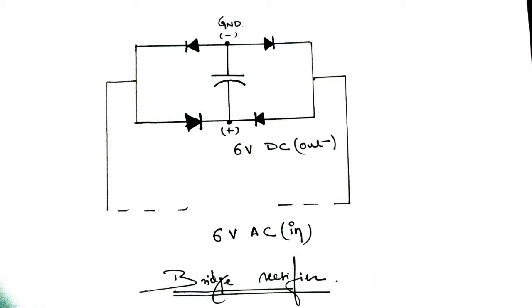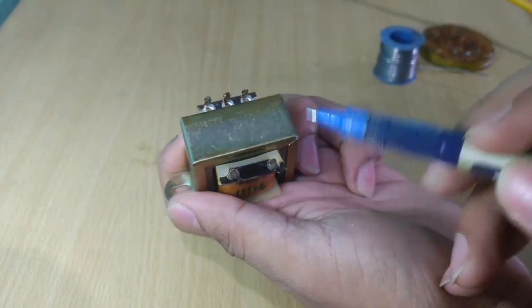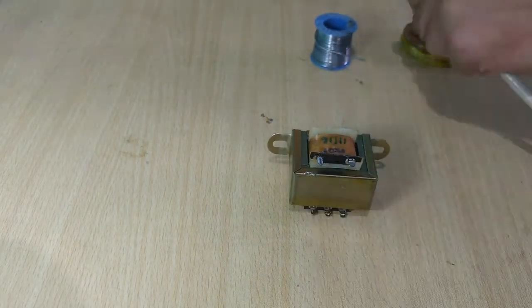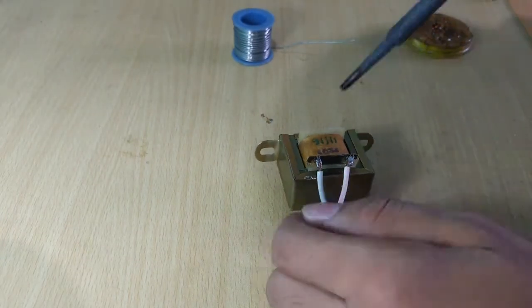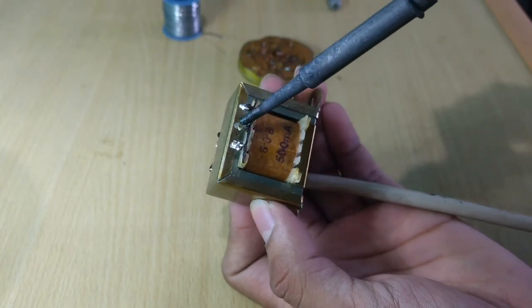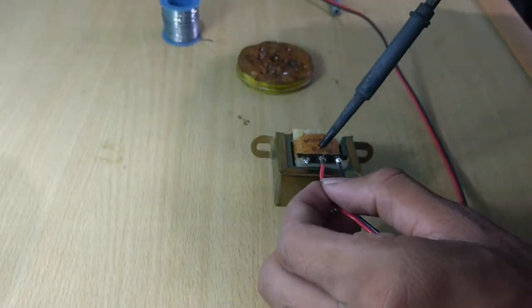The circuit diagram goes something like this. These are the two pins for the input, 220V AC. Just solder two wires at these two points. Remember that the wires should be strong enough to handle this kind of high voltage. And now for the output AC voltage that is 6V AC, we will use the pin at this side, any of the pins on the side, and the pin at the center. Just solder it there.